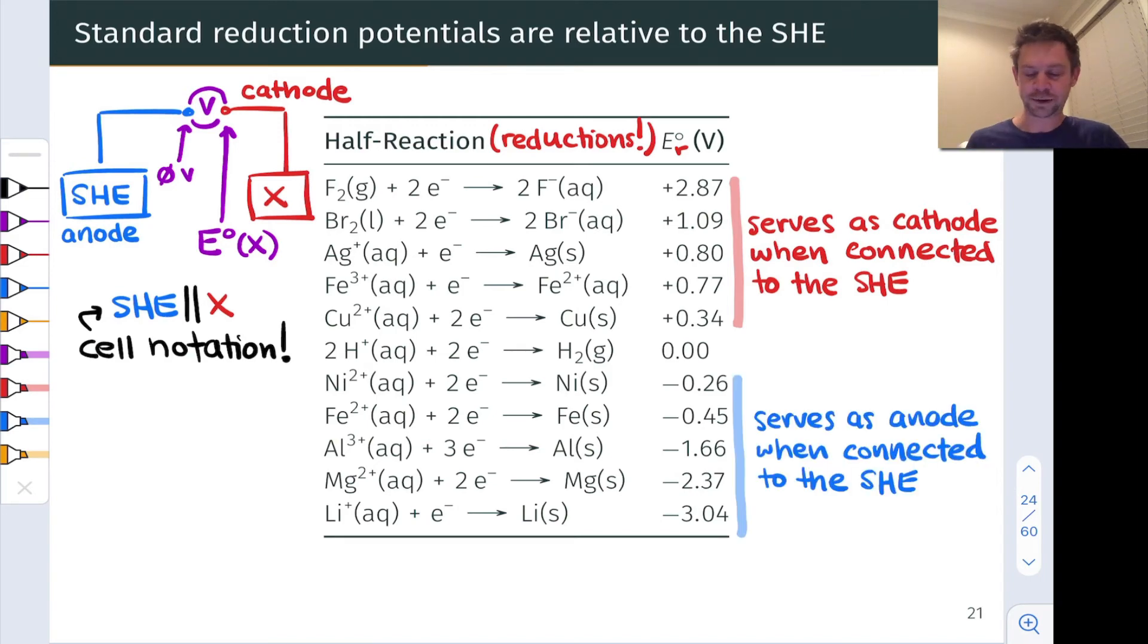These negative potentials correspond to cases where the reduction reaction as written is non-spontaneous when that half cell is connected to the SHE. On the contrary, the oxidation of the component on the right-hand side to form the component on the left-hand side is spontaneous. And those electrons that are released are given to the SHE spontaneously. So electrons spontaneously flow from X to the SHE in these cases when the reduction potential is negative, negative with respect to our standard zero potential.